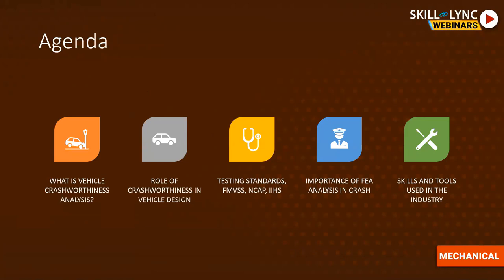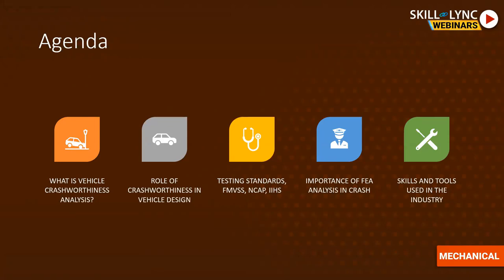Our topics today include specific items in terms of testing standards like FMVSS and IIHS, not only for the United States but also for the rest of the world. I would also like to give some vision about product design before showing vehicle design, because we need to understand the role of crash worthiness in product design, especially in vehicle design — though crash worthiness is also used in aerospace or satellites. Today we focus on vehicle designs only.